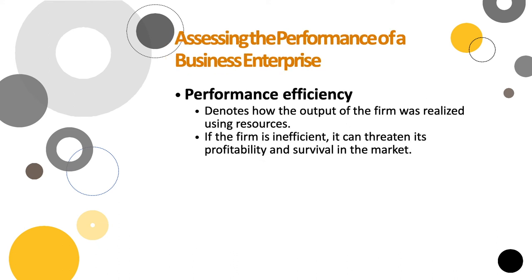Another measure is performance efficiency. Efficiency denotes how the output of a system can be realized using fewer or better-utilized resources. If a firm is inefficient, it can hurt profitability and the firm's survival in the market. Efficiency is about using each input as effectively as possible to reduce costs.